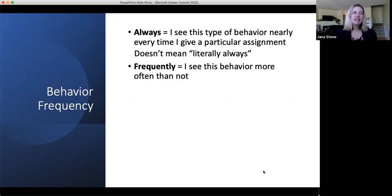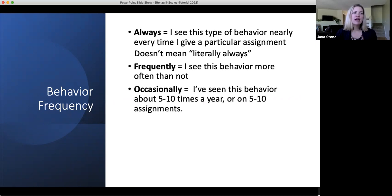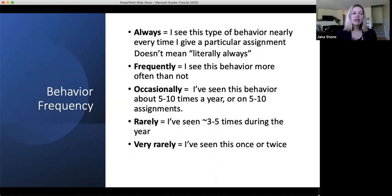Frequently means you've seen it more often than not, and occasionally is about five to ten times a year or on five to ten assignments. Rarely is around three to five times during the year, and very rarely is only once or twice ever. Never means you have never, ever seen that behavior from that student.